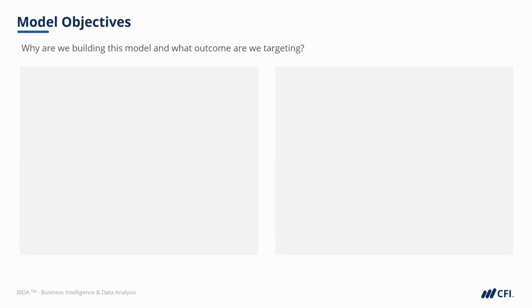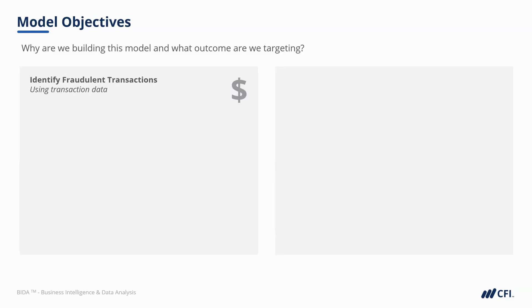The first area is model objectives. This helps us answer: why are we building this model, and what outcome are we targeting? This is particularly relevant when our models are making predictions that categorize data. We have to be clear on what outcome we're targeting and what types of errors we most want to avoid. For example, with our fraudulent transactions, we're trying to identify the most likely fraud using transaction data.